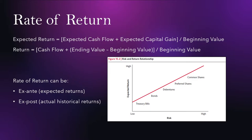Ex-ante can be calculated as the expected cash flow — meaning dividends for the most part — plus the expected capital gain, divided by the beginning value. That is how you get the expected return, especially for common shares. If you are looking at bonds, it might be the interest gained on the bond plus the expected capital gain, divided by the beginning value of that bond.